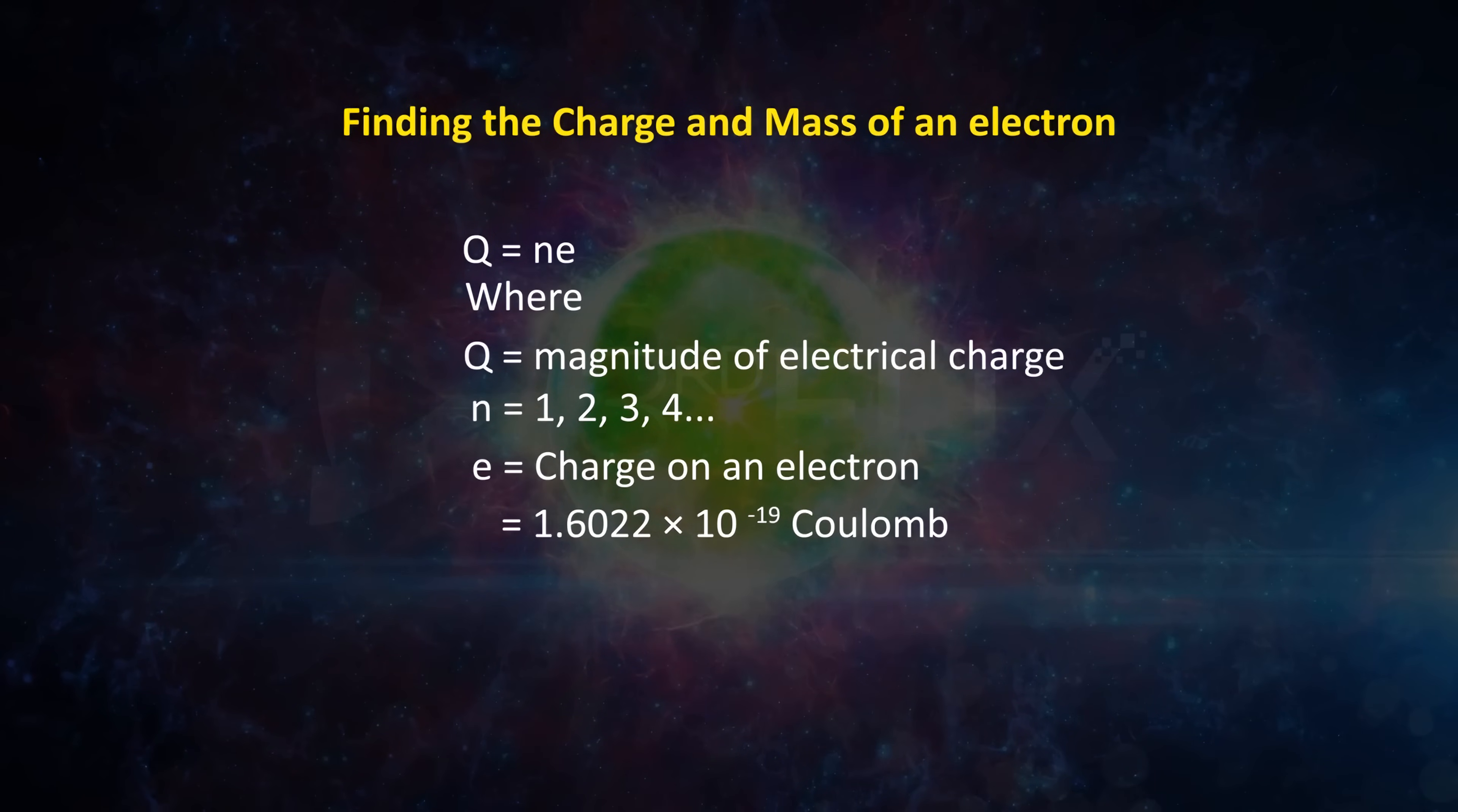Later, by combining the result of Millikan's oil drop experiment and Thomson's value of e/m ratio, the mass of the electron was determined.